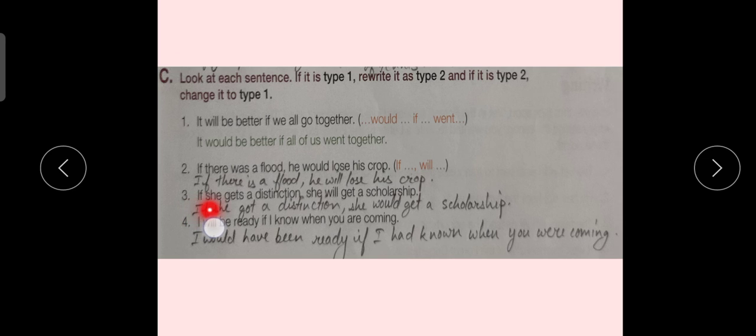Sentence number 3. If she gets a distinction, she will get a scholarship. Sentence is If she got a distinction, she would get a scholarship. Sentence number 4. I will be ready if I know when you are coming. Answer is I would have been ready if I had known when you are coming.